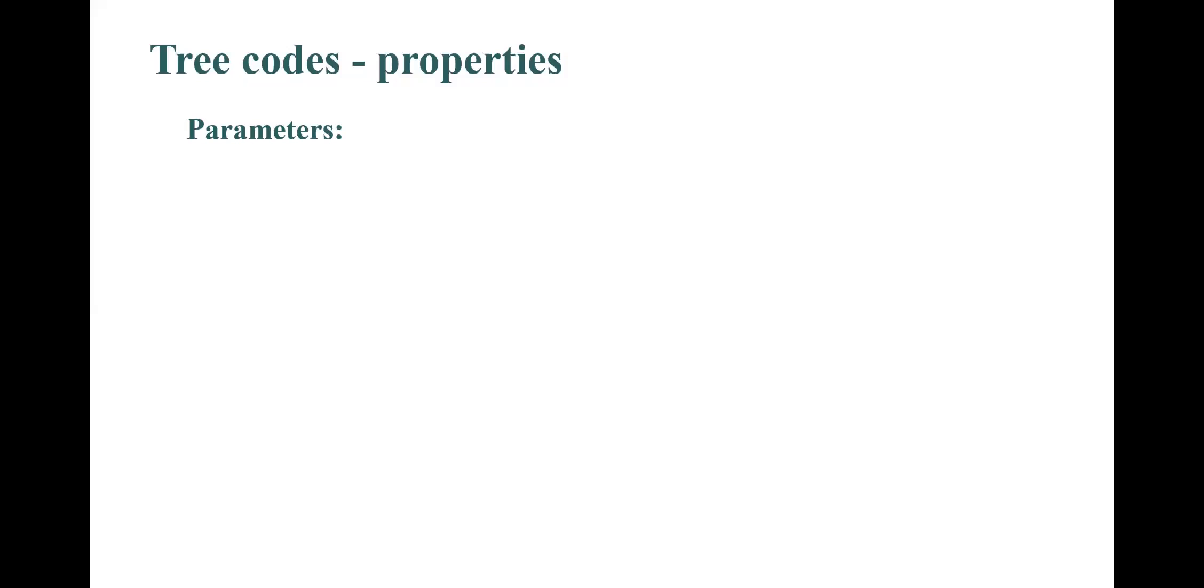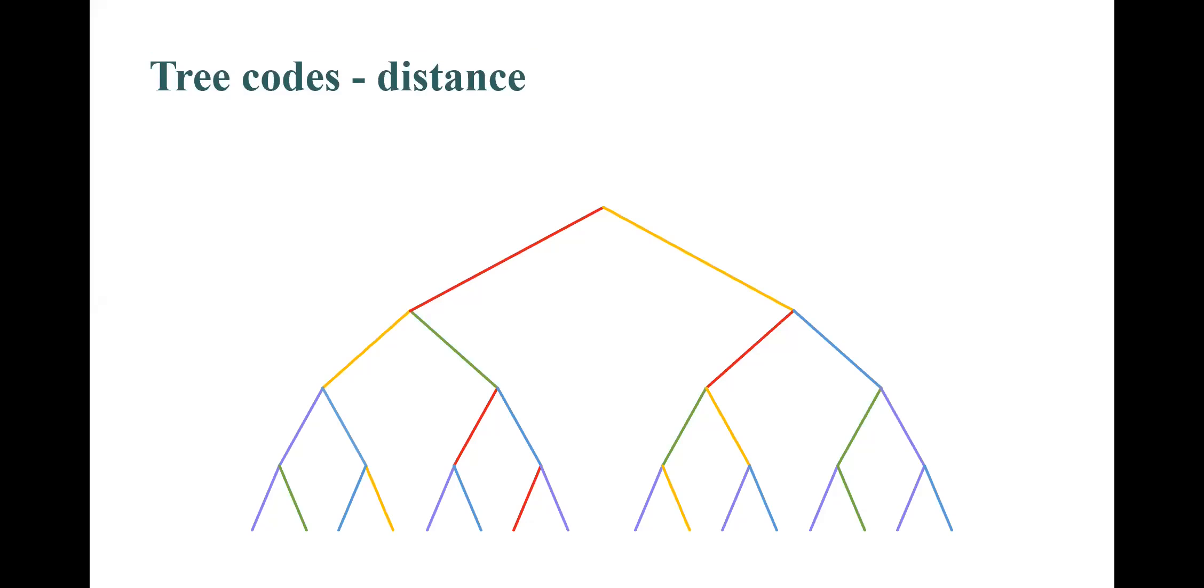Tree codes have two parameters to be considered. The first parameter is the rate, which is defined in the natural way. The second is the distance. To better understand this parameter, let's come back to the illustration. We consider any two vertices of equal depth, and we measure the fraction of different colors they have in the path from their least common ancestor to them.